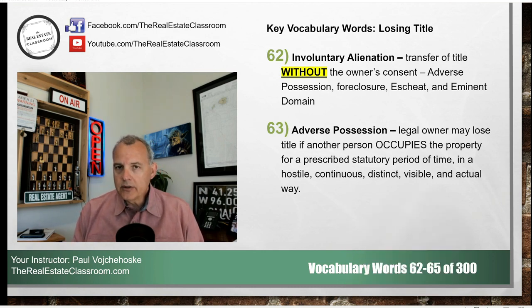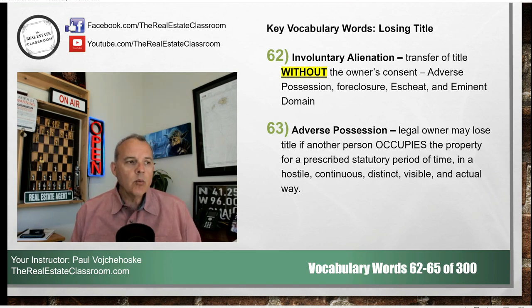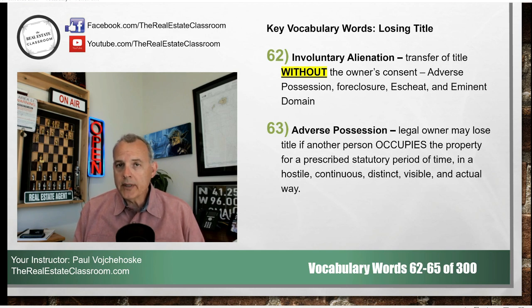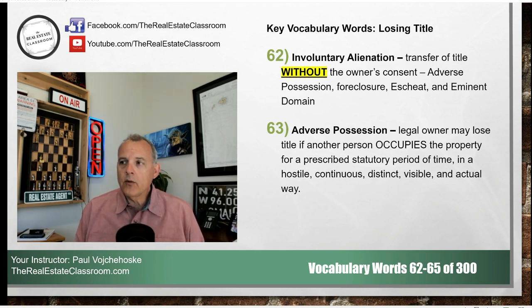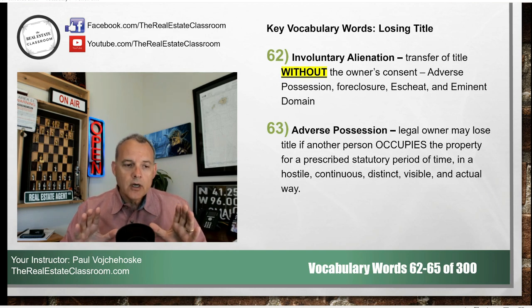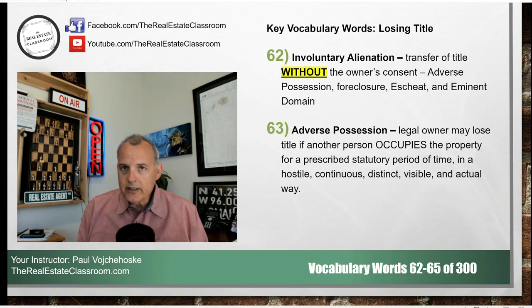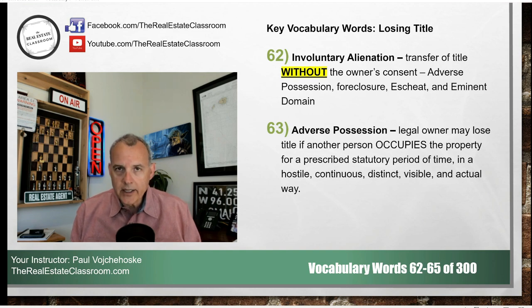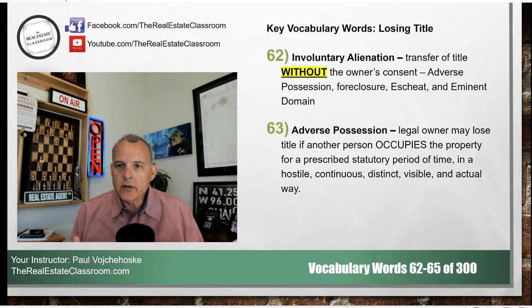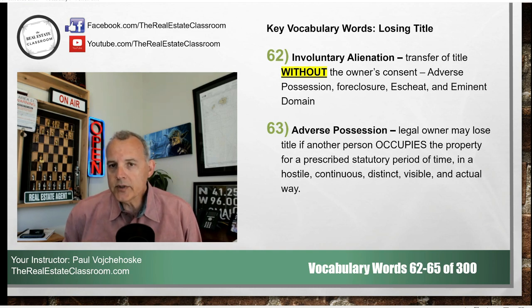These particular groupings of vocabulary words all revolve around someone losing title or losing ownership to their property. In my previous video, we did the vocabulary words all revolving around voluntary alienation, which is the acquiring of real property. So today we're going to focus on those words about losing ownership.